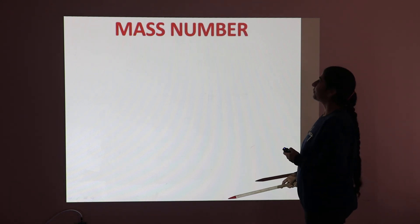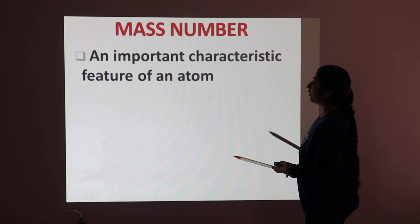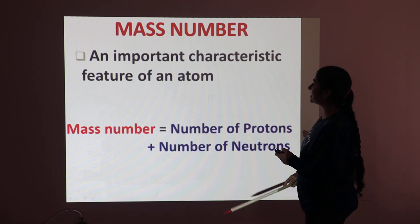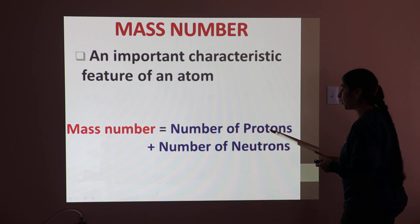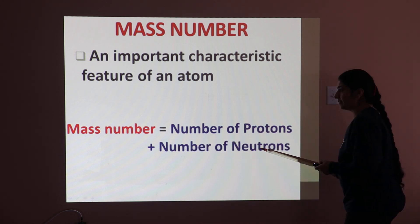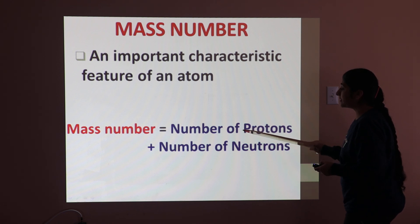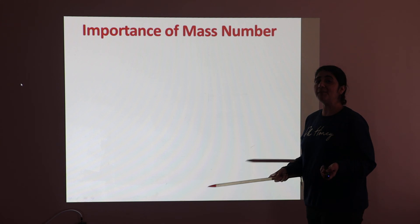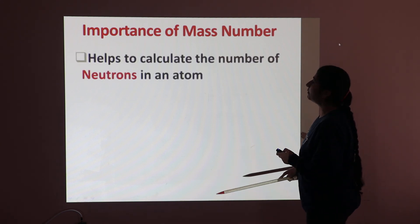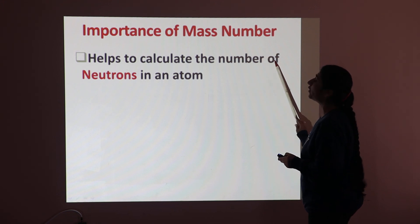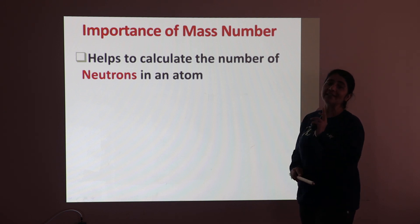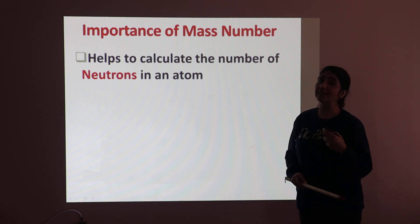The next term is mass number, which is also an important characteristic feature of an atom. The mass number is equal to the number of protons plus the number of neutrons. So if we sum the protons and neutrons in an atom, that gives its mass number. The mass number helps to calculate the number of neutrons in an atom — if you know the mass number, you can easily calculate how many neutrons are present.